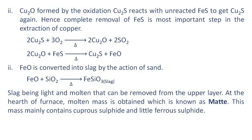Iron oxide is converted into slag by the action of sand. Slag, being light and molten, can be removed from the upper layer. At the hearth of the furnace, a molten mass known as matte is obtained, which mainly contains cuprous sulfide and a little ferrous sulfide.